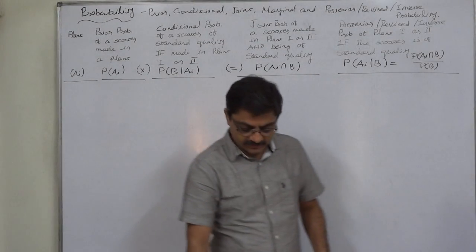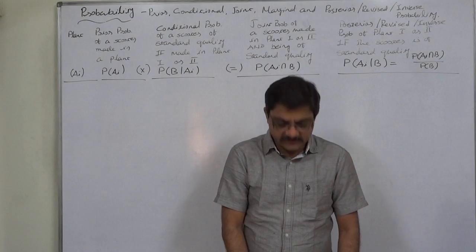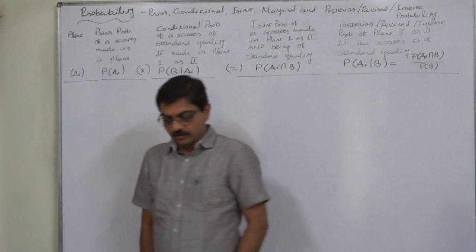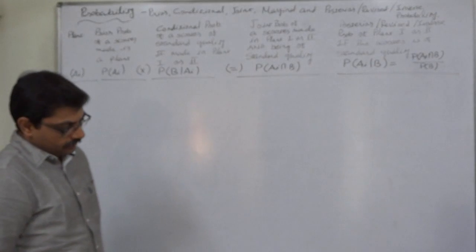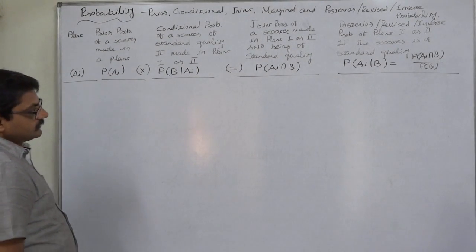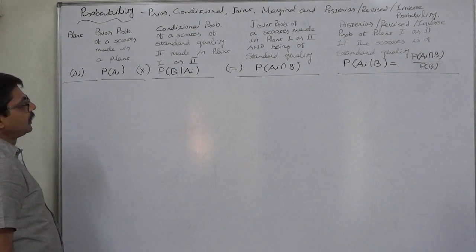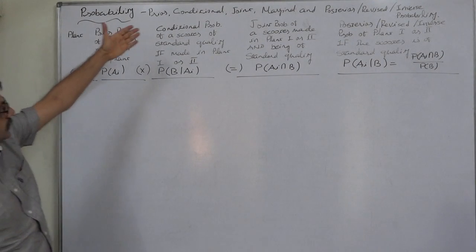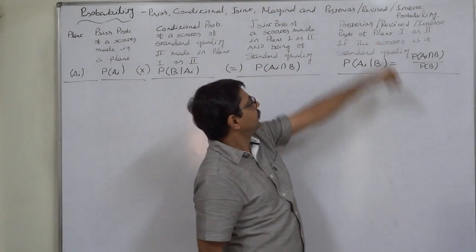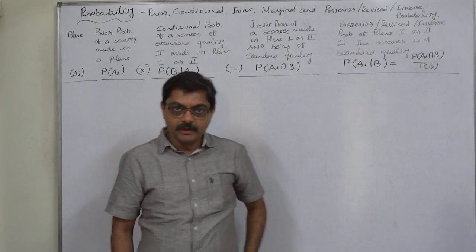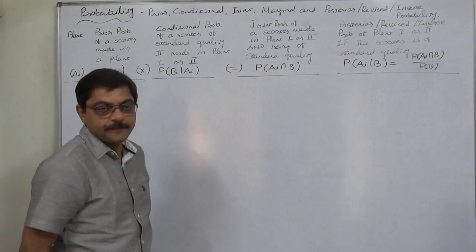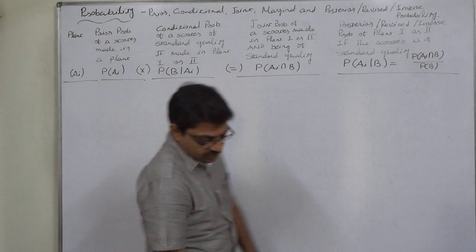Hello friends. This next case is not of basics of probability but of Bayes theorem, or Bayes probability law, consisting of the calculation of conditional probability, joint probability, marginal probability, and posterior or revised or inverse probability. We are going to use the tabular approach. Let us first read the question.